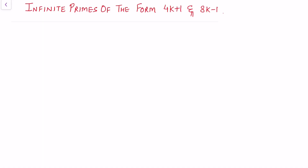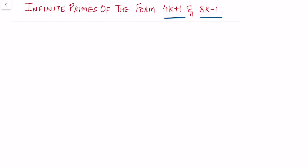In this video we will be proving that there are infinitely many primes of the form 4k+1 and 8k-1. To prove that there are infinitely many primes of these types, I will make use of the Legendre symbol. Before starting the proof, let me recall some of the results we have established regarding the Legendre symbol.